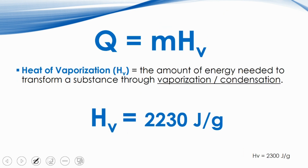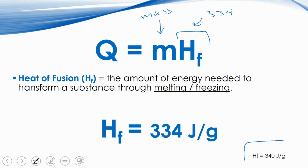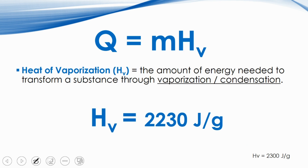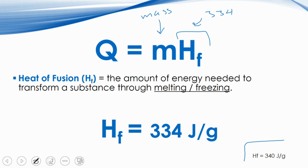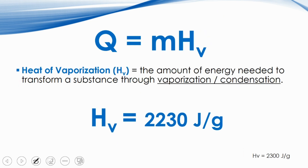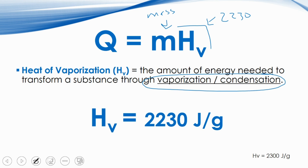For the heat of vaporization equation, it's very similar — the only thing that changes is the constant. For vaporization we're specifically talking about boiling and condensation phase changes. The constant is 2230 J/g. This represents the mass of your substance — water — times 2230. This is only used when we talk about vaporization and condensation. In our class we use 2230, not the rounded value sometimes seen online.